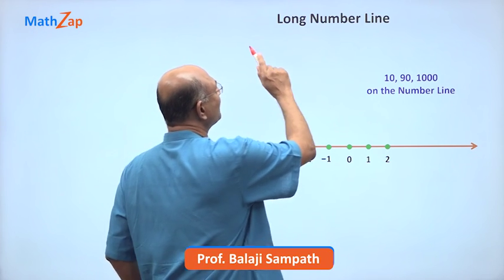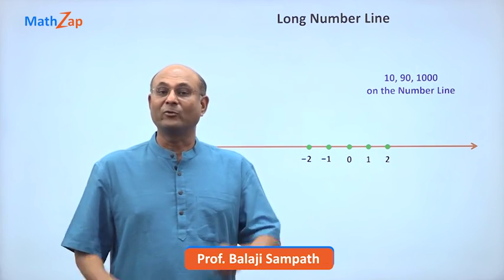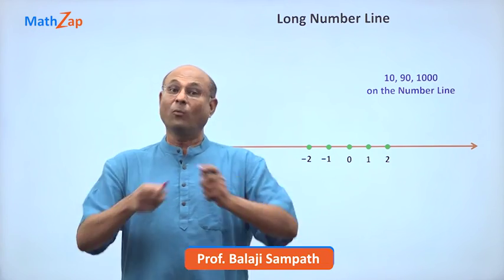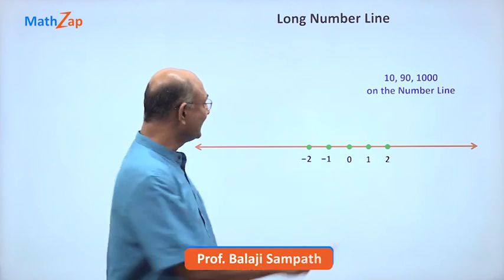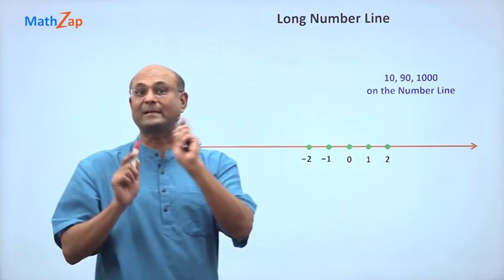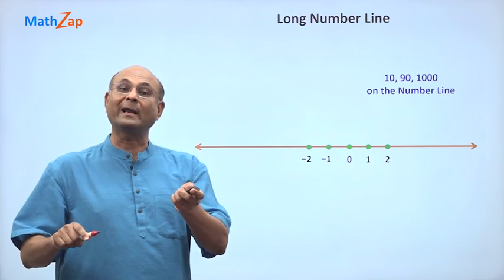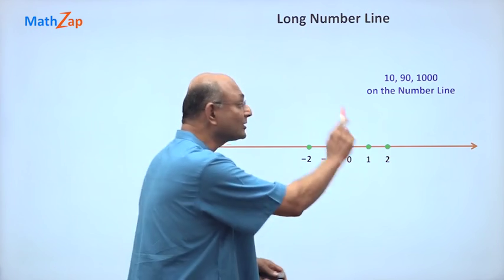Let us now learn about the concept of the long number line. Now you might think long number line means one kilometer long. No, we are still going to talk about this size number line, but we are going to mark large numbers on this number line.